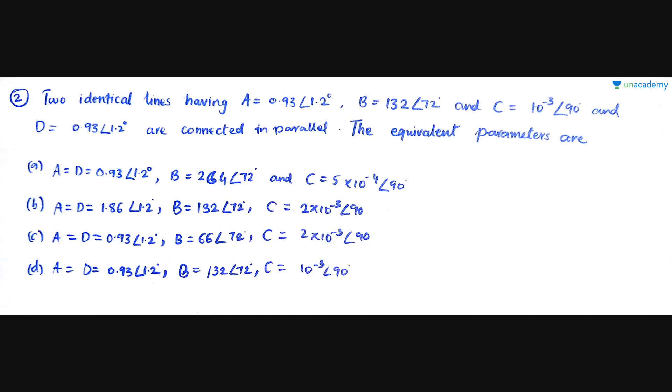Let's do the next question. After reading this question, you pause the video and do it on your own, then recheck your answer. Two identical lines having A equals 0.93 at angle 1.2 degrees, B equals 132 at angle 72 degrees, C equals 10^-3 at 90 degrees, and D equals 0.93 at 1.2 degrees are connected in parallel. The equivalent parameters are required.